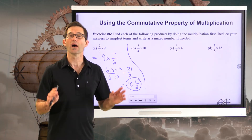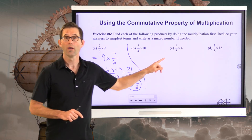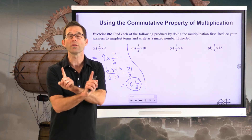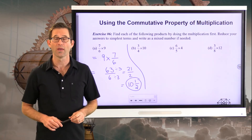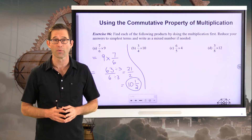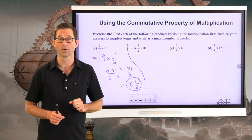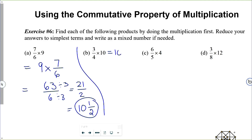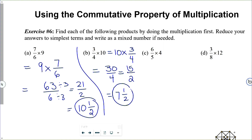Ten is not nicely divisible by four, four is not nicely divisible by five, and twelve is not nicely divisible by eight. We flip the order of multiplication and then multiply as in the previous lesson. For three-fourths times ten: rewrite as ten times three-fourths, which is thirty-fourths. Dividing numerator and denominator by two gives fifteen-halves. Two goes into fifteen seven times with a remainder of one — so seven and one-half.